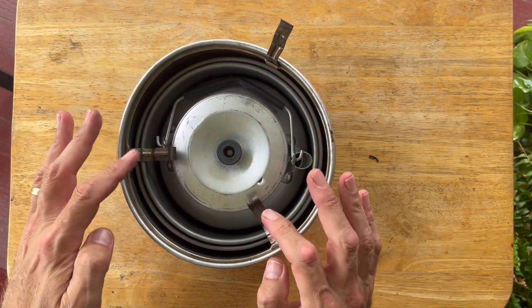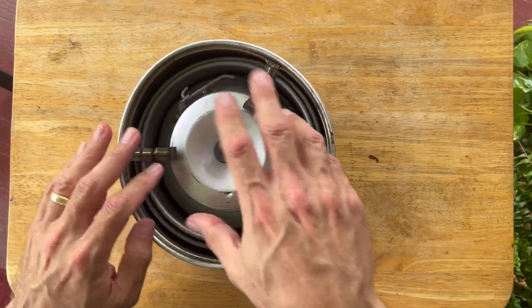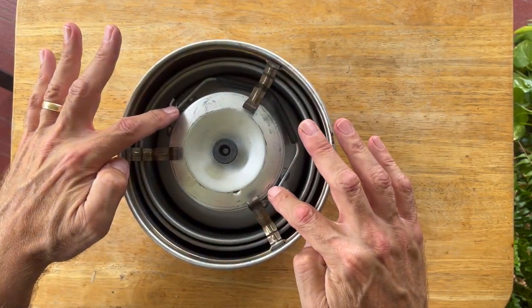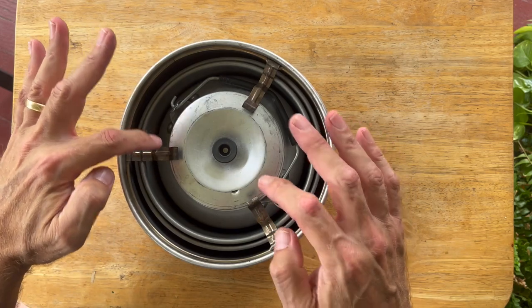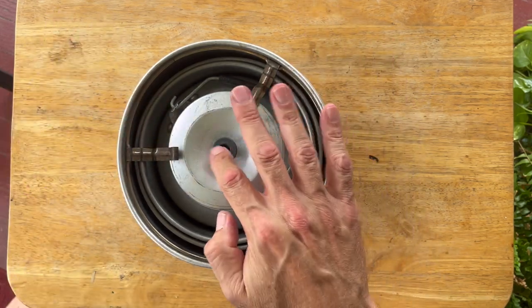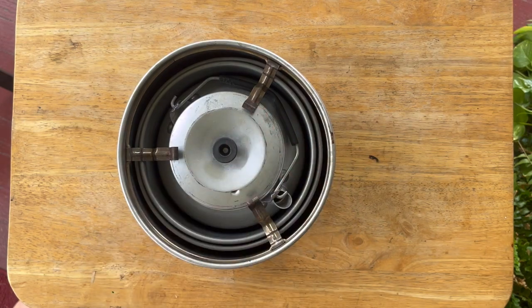At that point, I'm going to flip these down. And it's important to have these things actually not underneath one of these pot supports because it does cause them to stick up a little higher than they need to go.